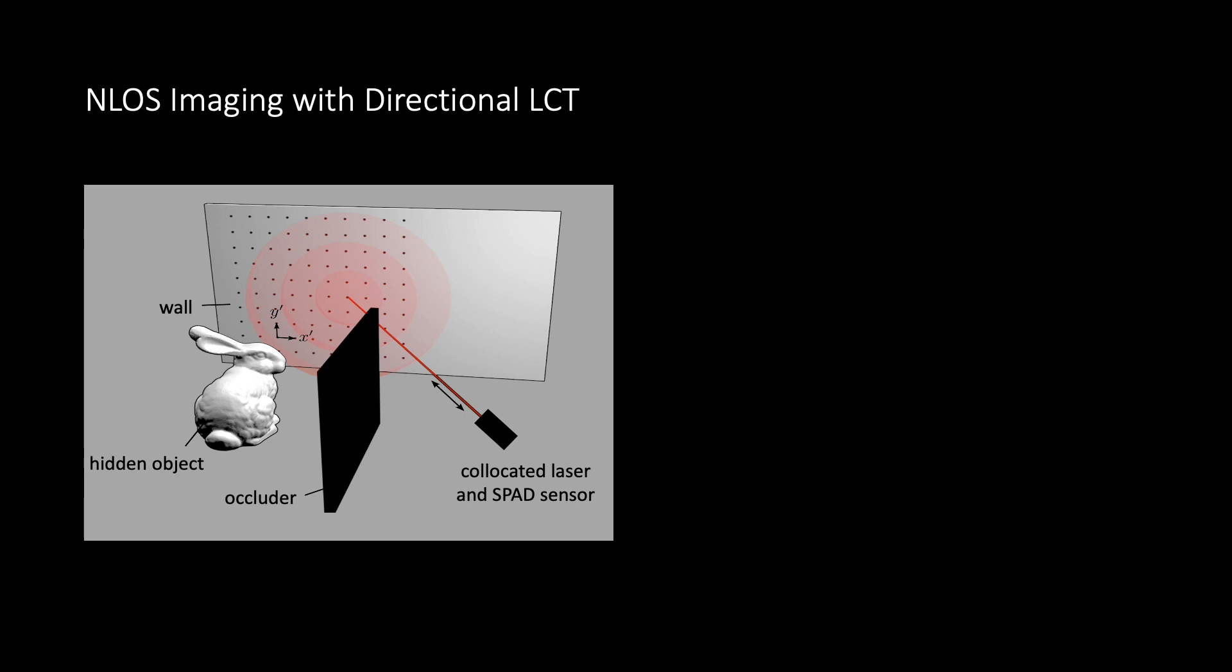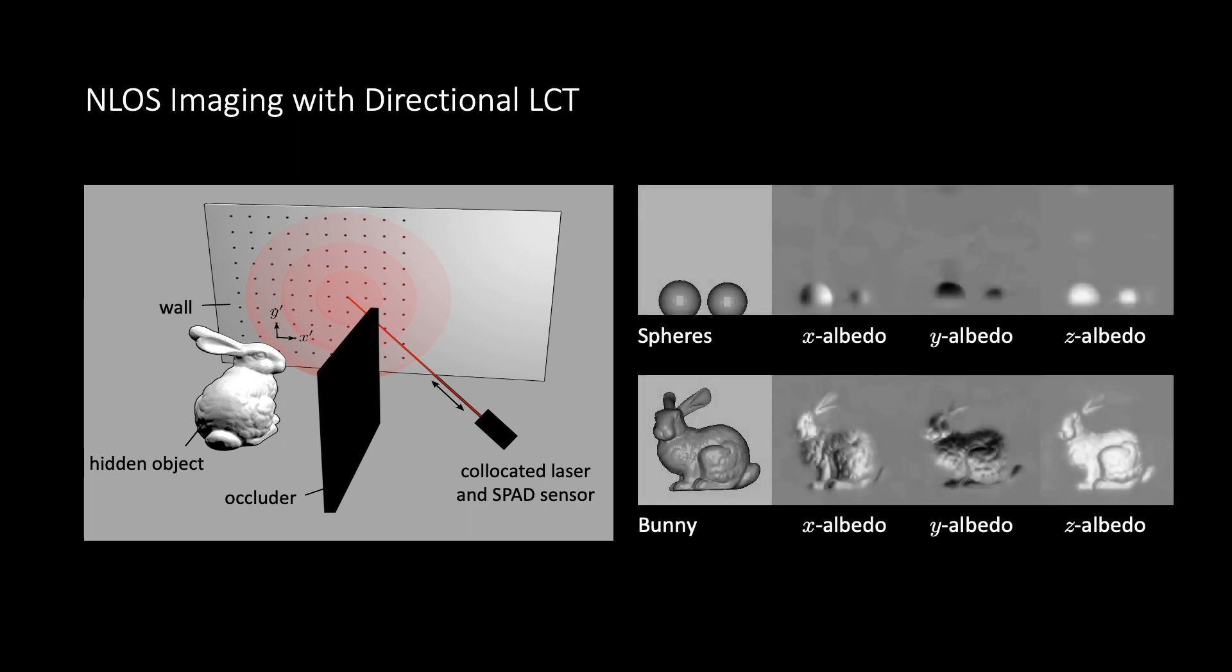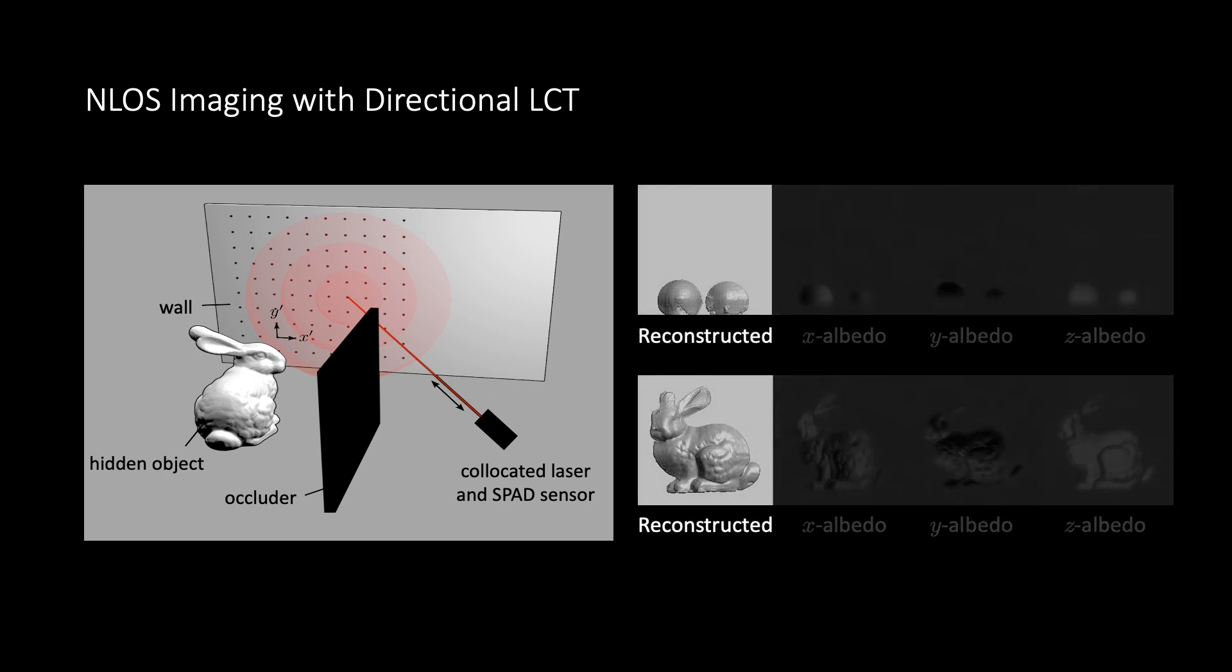We propose the directional light cone transform for reconstructing non-line-of-sight surfaces. Our approach jointly recovers hidden scene albedo and their surface normals, based on which 3D surfaces can be reconstructed. Our method is orders of magnitude faster than similarly based surface reconstruction methods and robust to background noise that is present in practical capture environments.